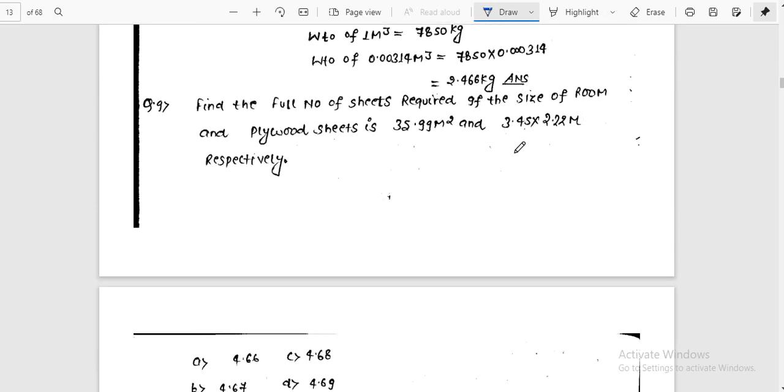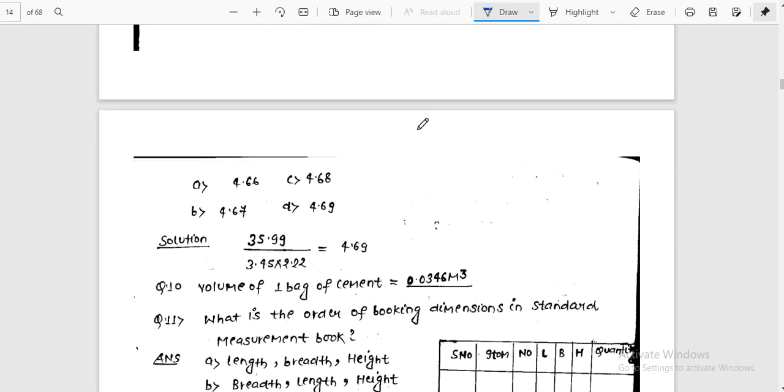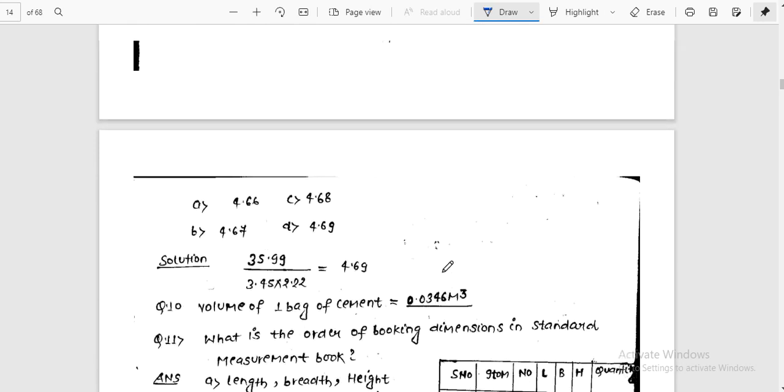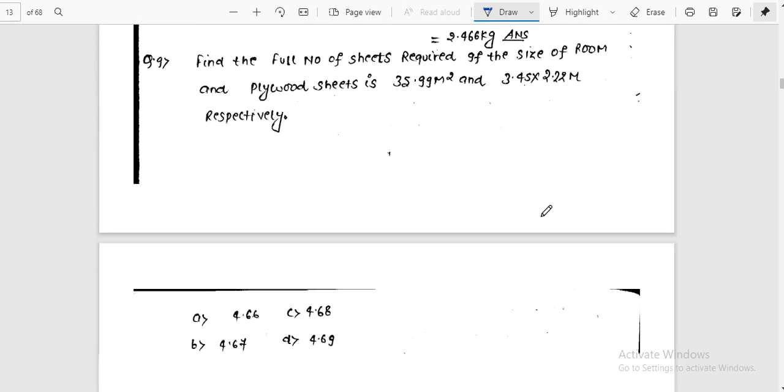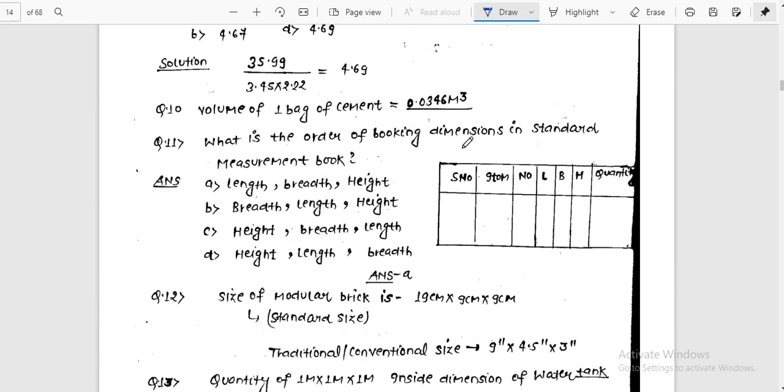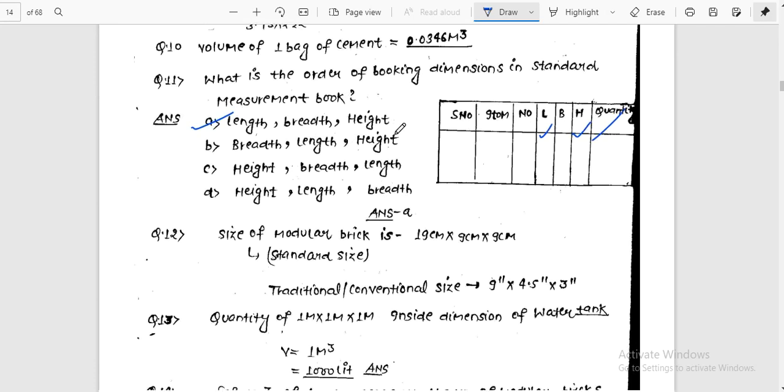To find number of seats required if room size is 35.99 square meters: divide by seat area of 3.4 × 2.2 to get 4.69 seats. Cement per cubic meter is 0.0346 cubic meters. The order of booking dimensions in the measurement book is length, then breadth, then height.